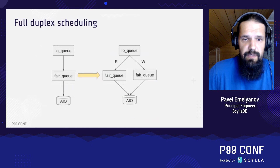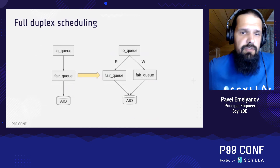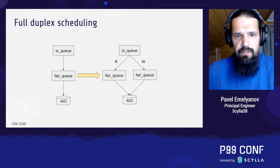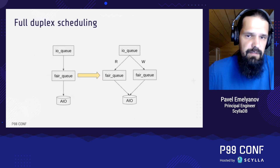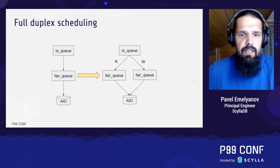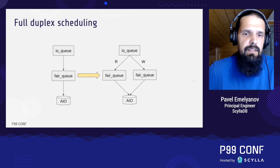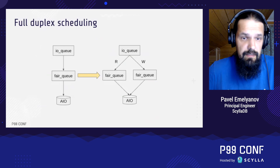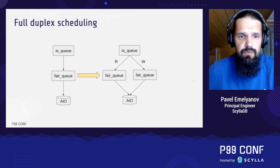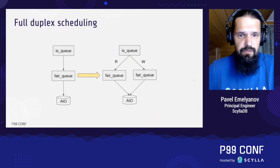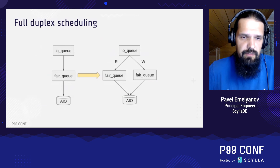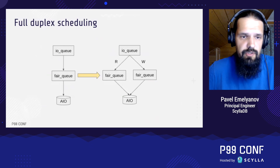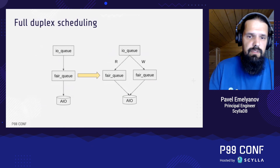In the case of the i4i disk, the scheduler would better not account reads and writes into the same token bucket — it's better to schedule them separately. And the 5.0 scheduler has this ability. Some under-the-hood details: the IO scheduler abstraction in Seastar is two-level, having the IO queue itself and the fair queue component that's responsible for cross-class balancing and that thing with tokens. There is now a configuration option in the IO properties YAML file that can split the IOQ's internal fair queue into two and make IOQ send reads and writes into different directions. We call this mode full-duplex scheduling.